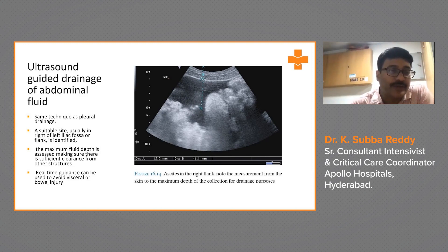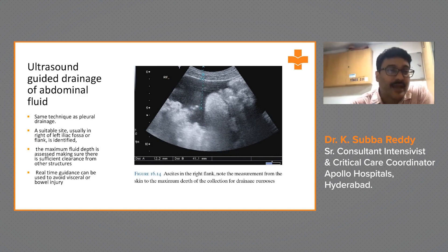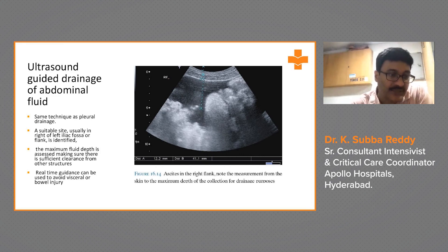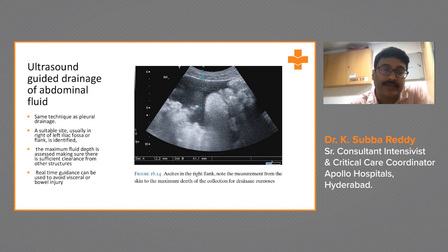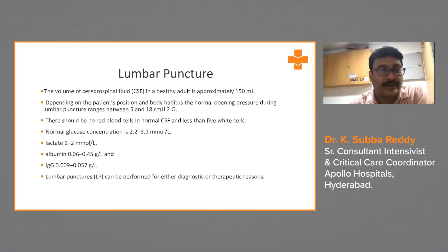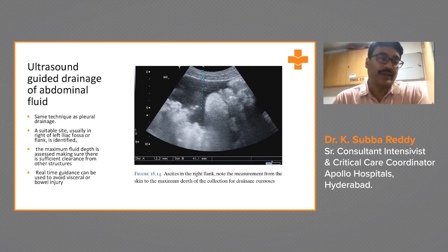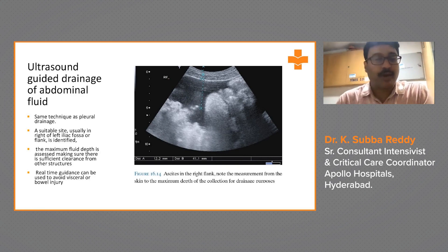For ultrasound-guided drainage of abdominal fluid, the same technique is used. The suitable site is usually the right or left iliac fossa or flank. The maximum fluid depth is assessed ensuring sufficient clearance from surrounding structures. Real-time guidance is used to avoid injury to bowel or viscera. Measure from skin to the maximum depth of collection using electronic calipers, then insert the needle under continuous ultrasound monitoring to prevent injury to bowel and viscera.